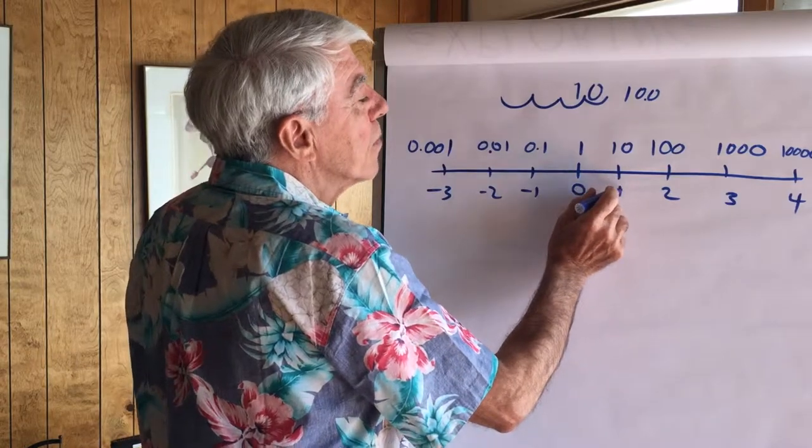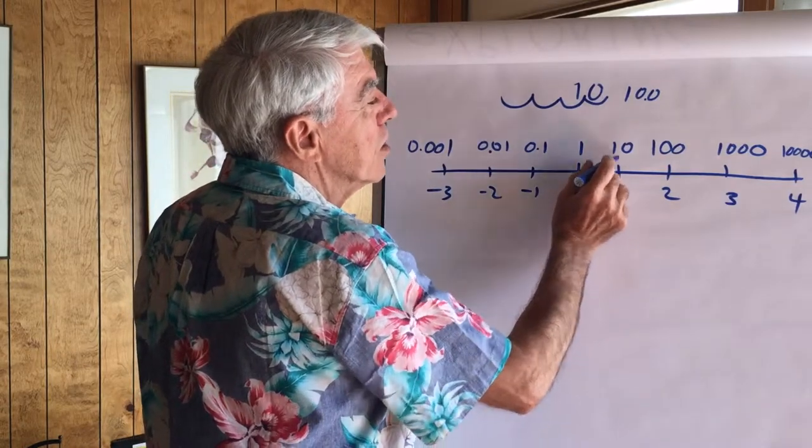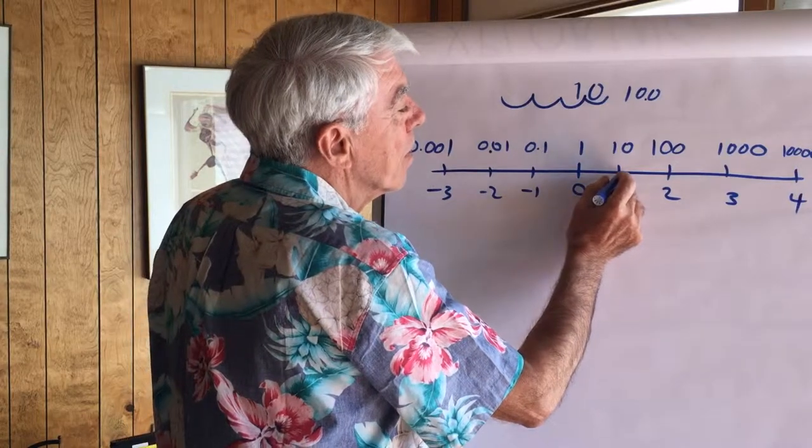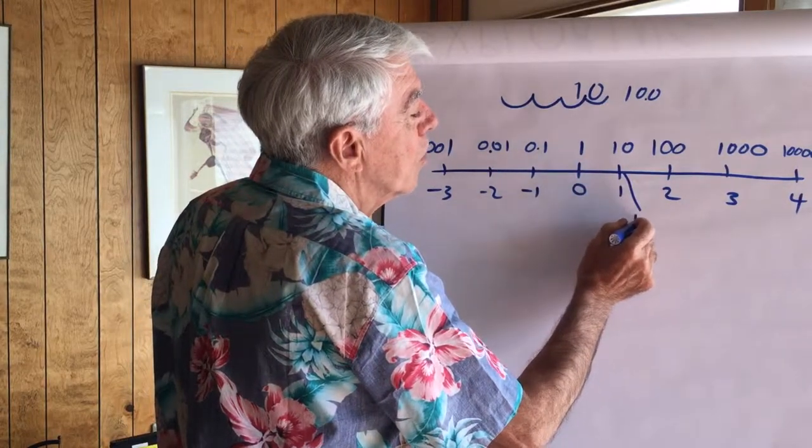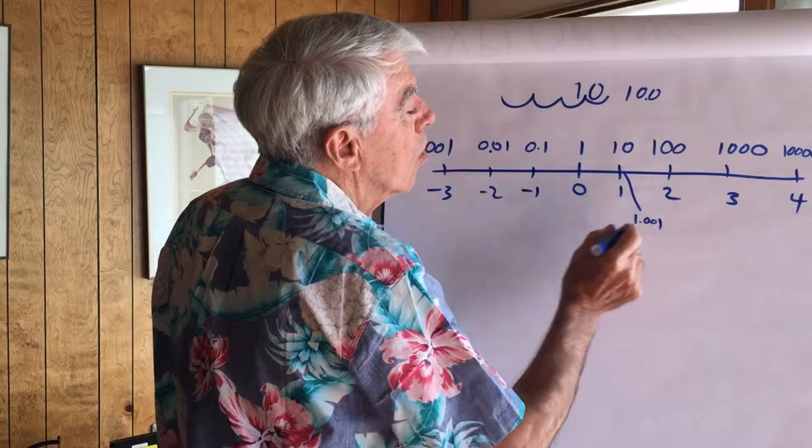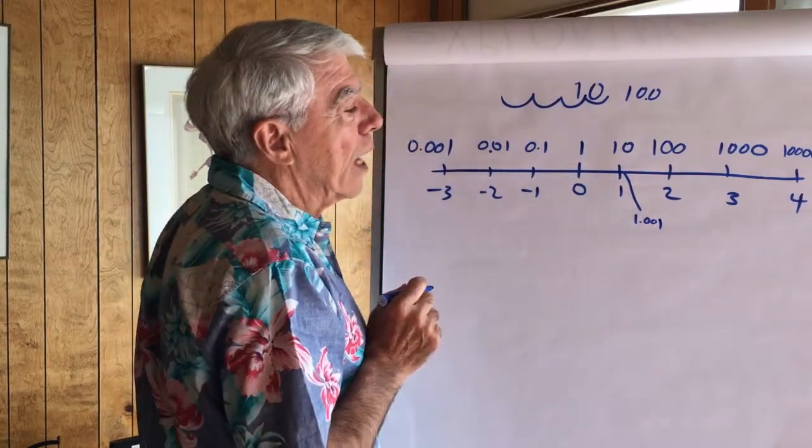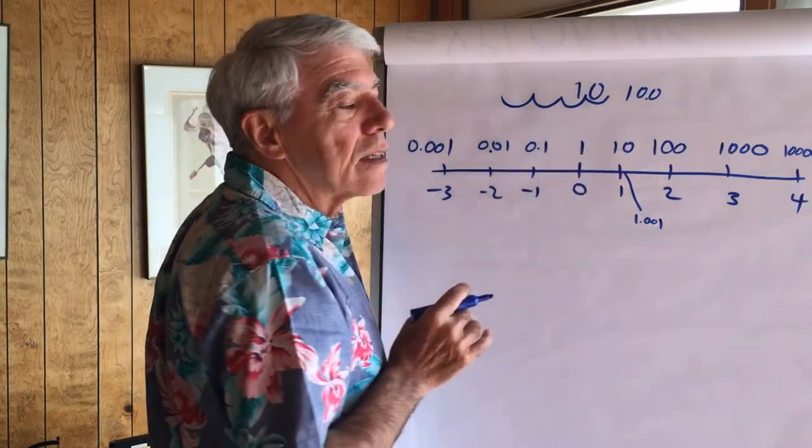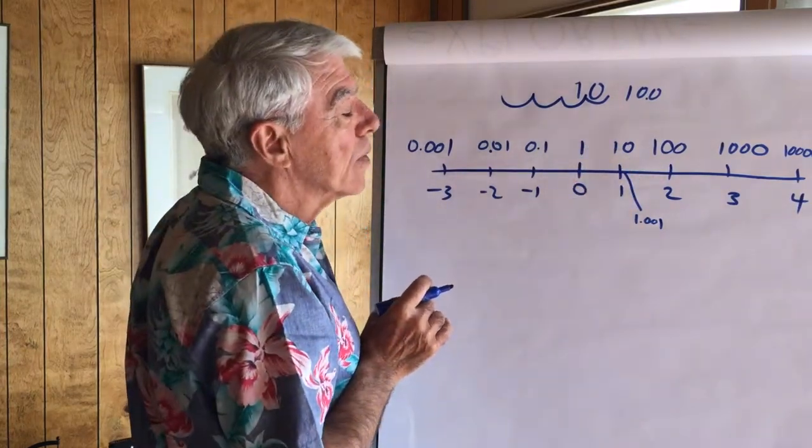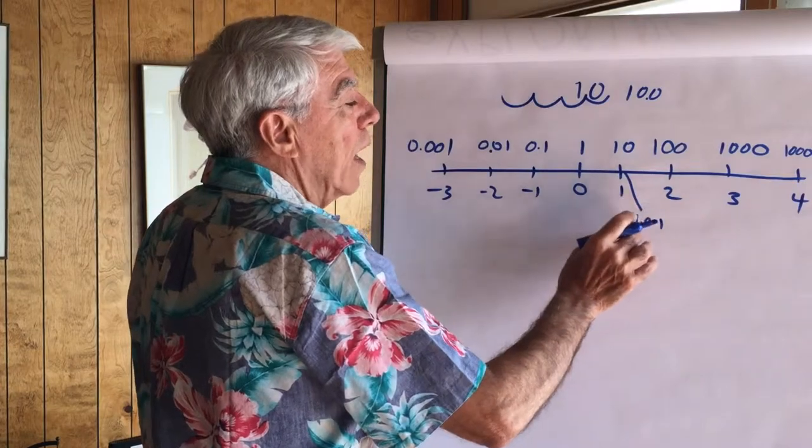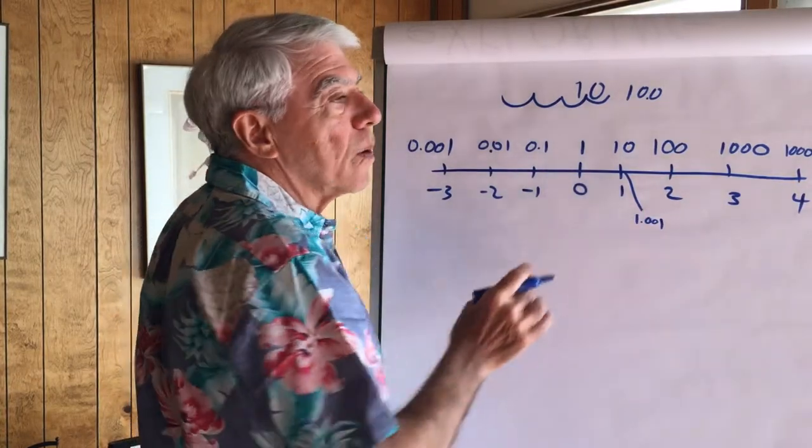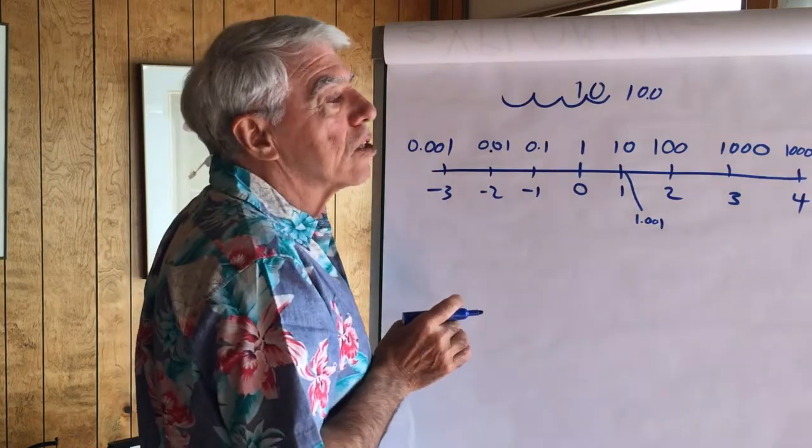What do you imagine if 10 to the first is 10, what do you imagine that right here, 1.001, an exponent of that, what would that be? Well, a good guess would be a number a little teeny bit bigger than 10. So, looking at the number line, we can, for the first time now, see that exponents don't have to be integers.